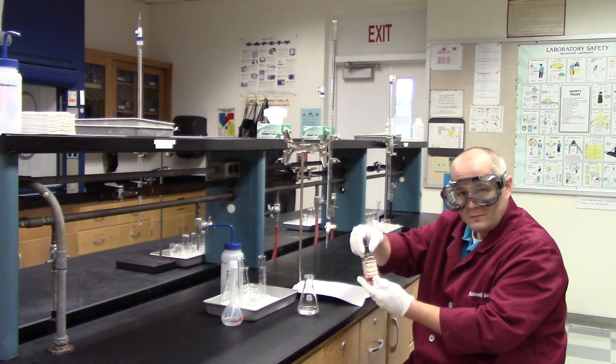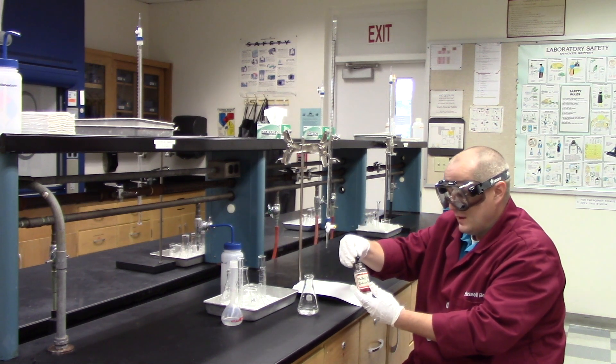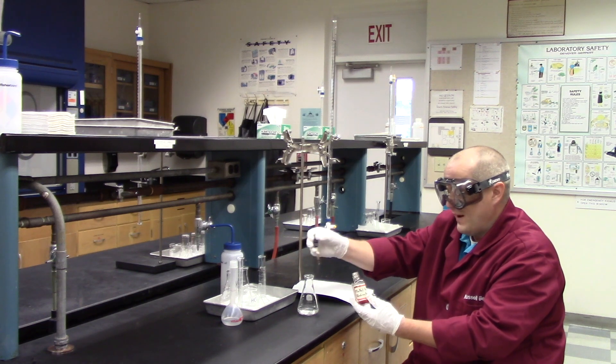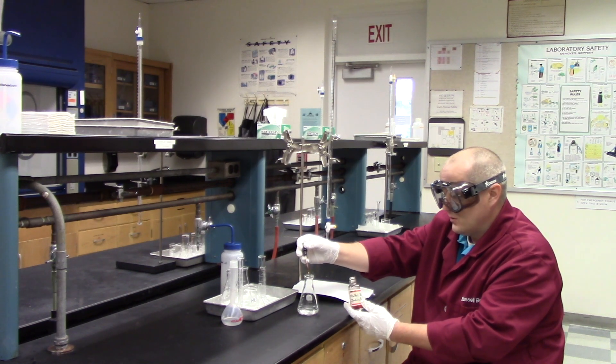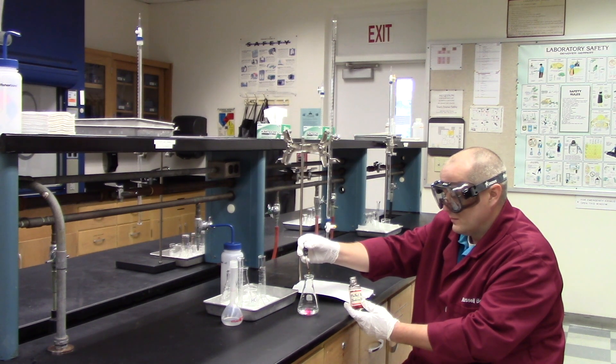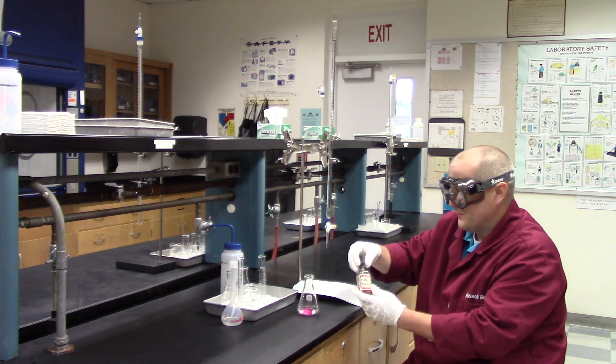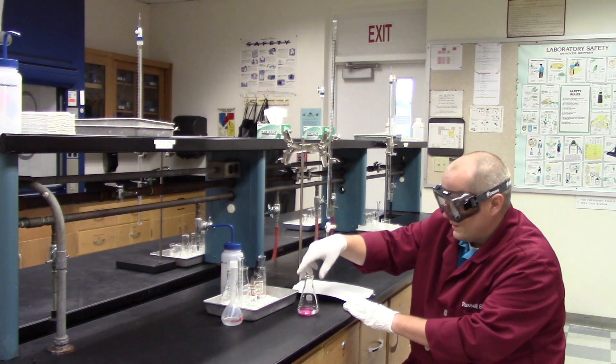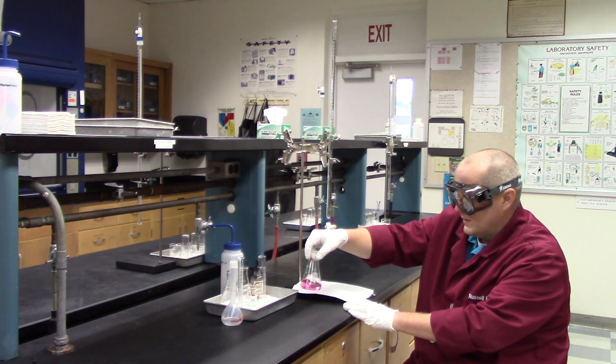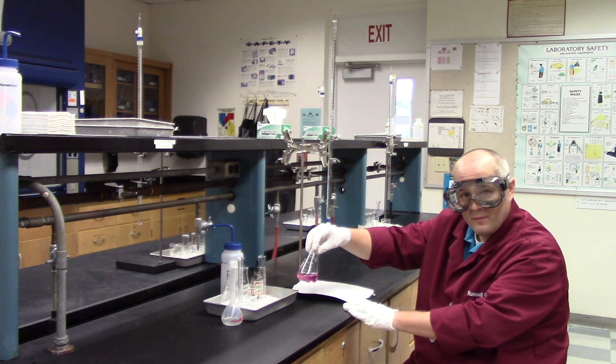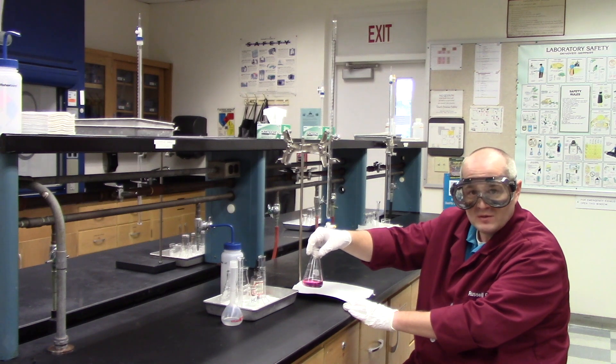Now take the indicator. This is methyl red, and put in five drops of the indicator into the Erlenmeyer. Now as you can see, the solution turned pink. Methyl red will turn pink when the pH is below seven.